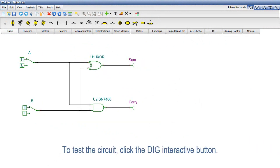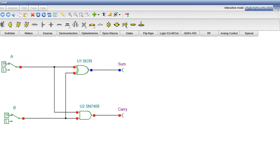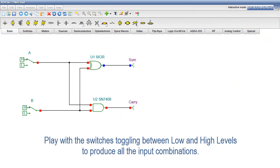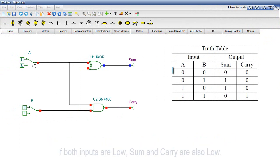Now, to test the circuit, click the DIG Interactive button. Play with the switches toggling between low and high levels to produce all the input combinations. If both inputs are low, SUM and CARRY are also low.